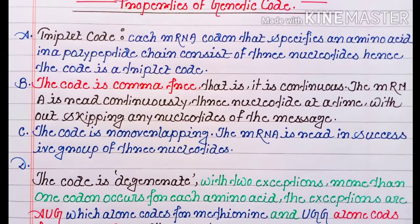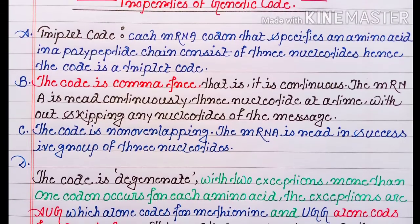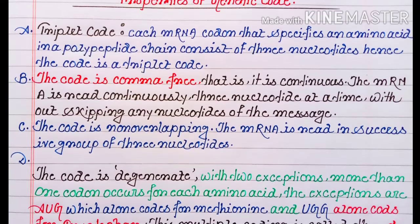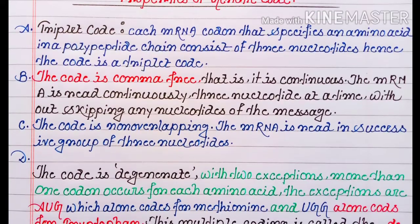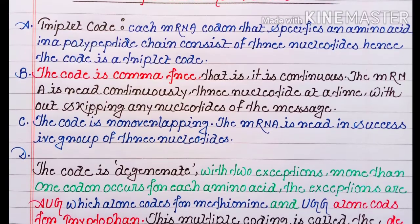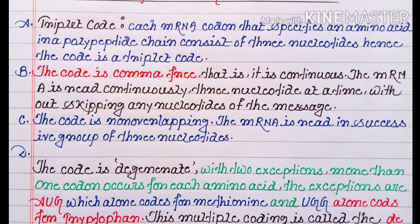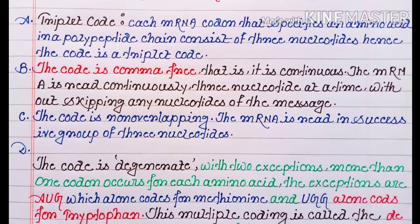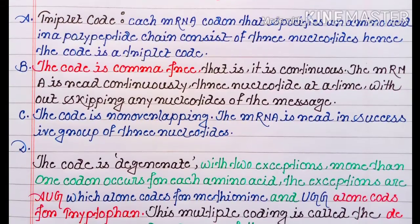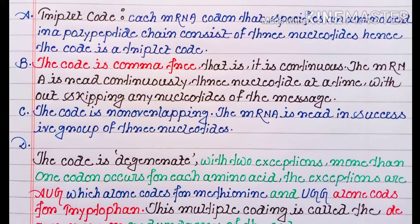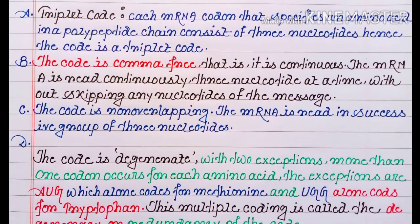Next, the code is comma-free, that is, it is continuous. The mRNA is read continuously, three nucleotides at a time, without skipping any nucleotides of the message. Next point: the code is non-overlapping. The mRNA is read in successive groups of three nucleotides.